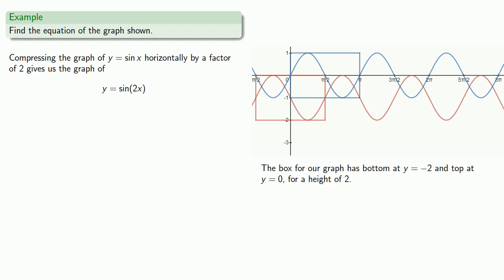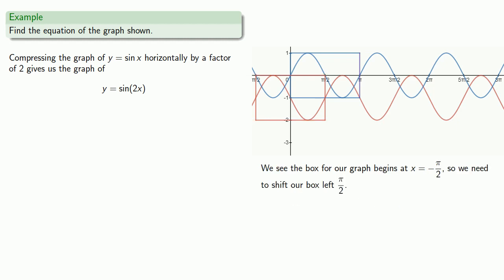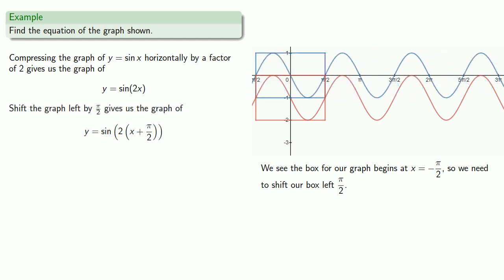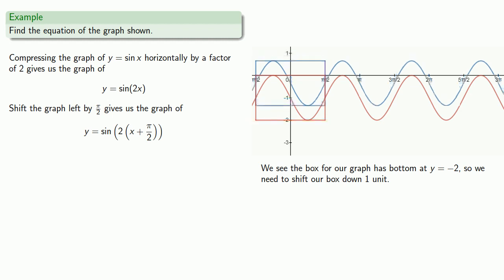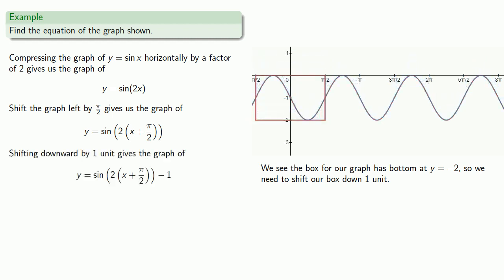The box for our graph has a bottom at y equals negative 2 and a top at y equals 0, for a height of 2, so we don't need to adjust the height. The box for our graph begins at x equals negative pi halves, so we need to shift our box down by one unit. Shifting down by one unit gives us the final graph.